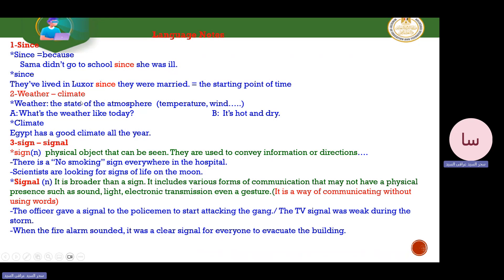What about 'weather' and 'climate'? We use both to talk about the state of the atmosphere — temperature, wind, rain, and so on. But 'weather' means the condition of the atmosphere over a short time, like a day or a week: 'What is the weather like today? It's hot and dry.' Climate refers to a long period of time, months or years: 'Egypt has a good climate all over the year.'